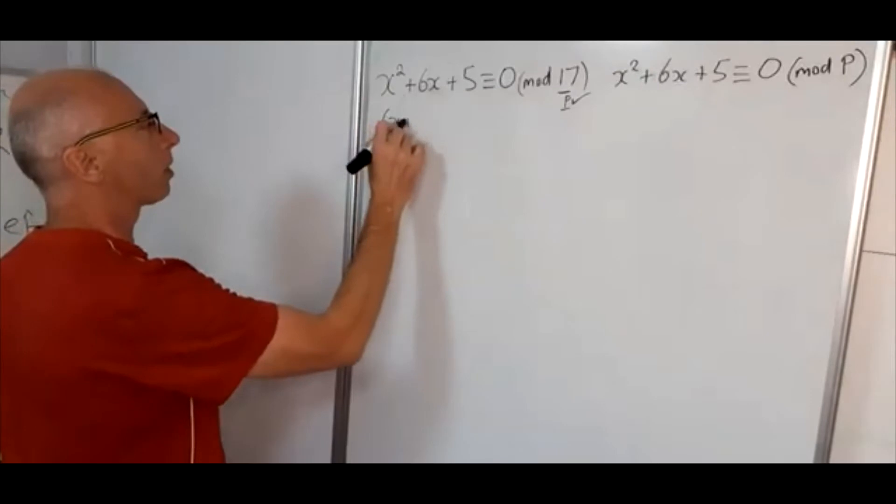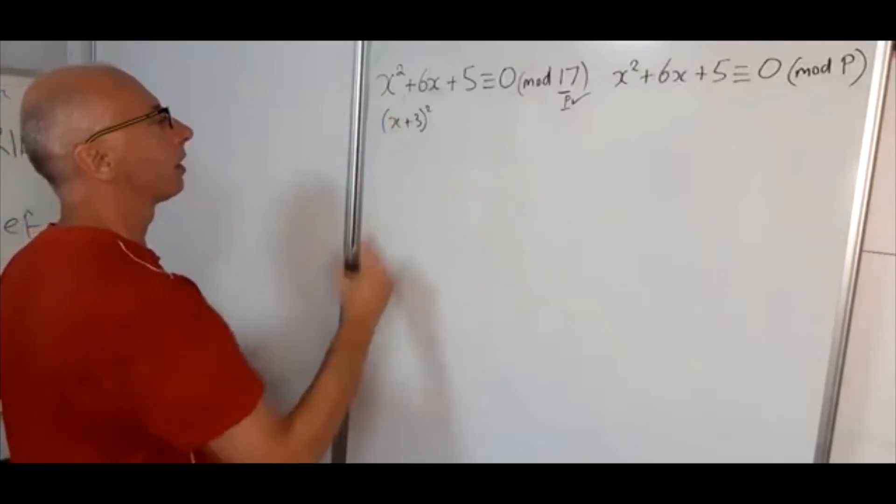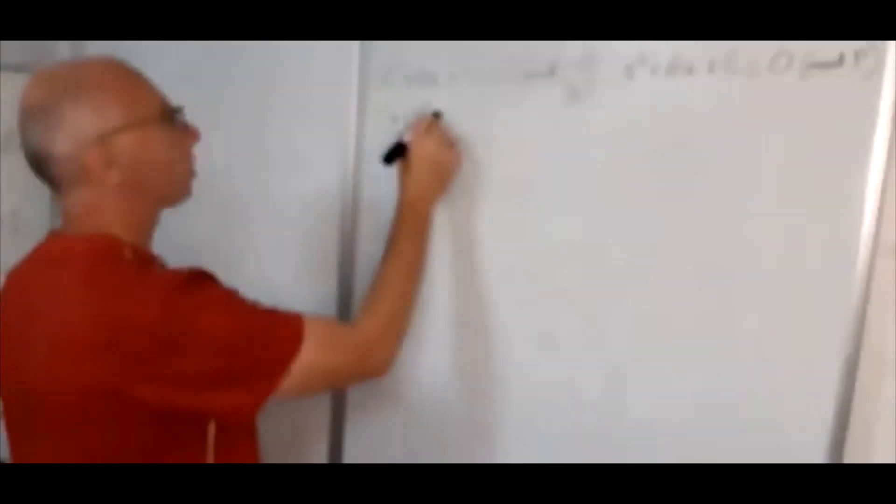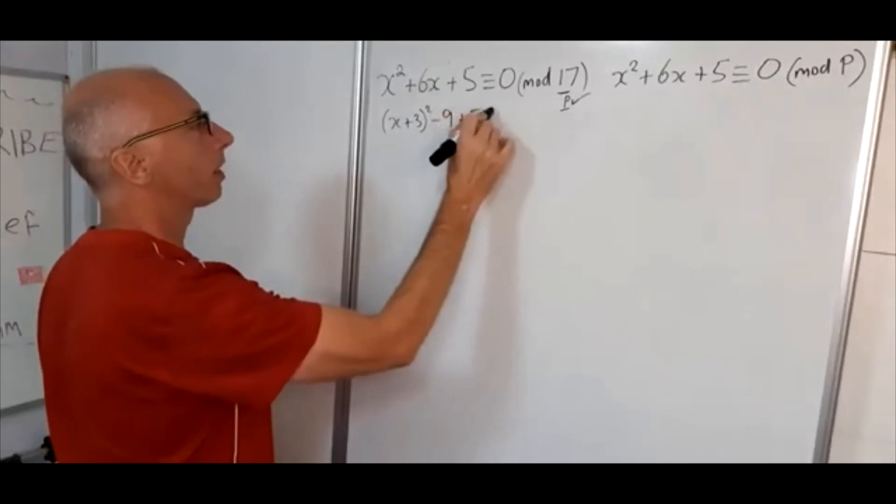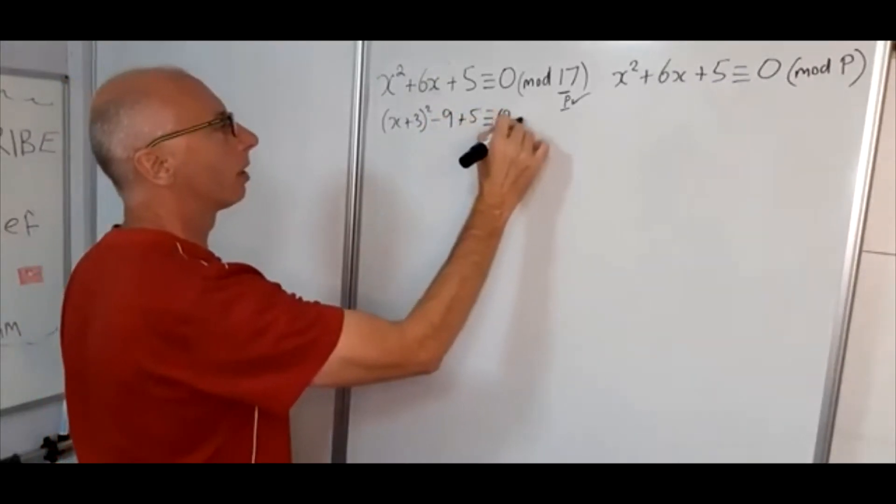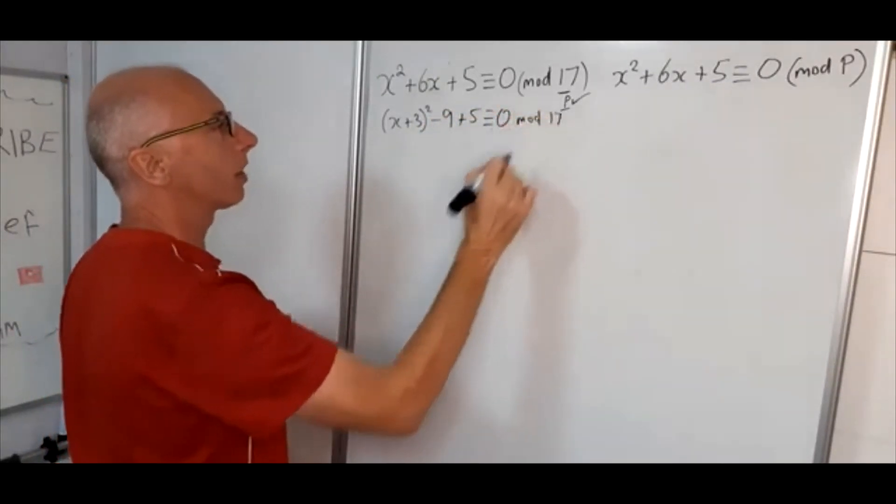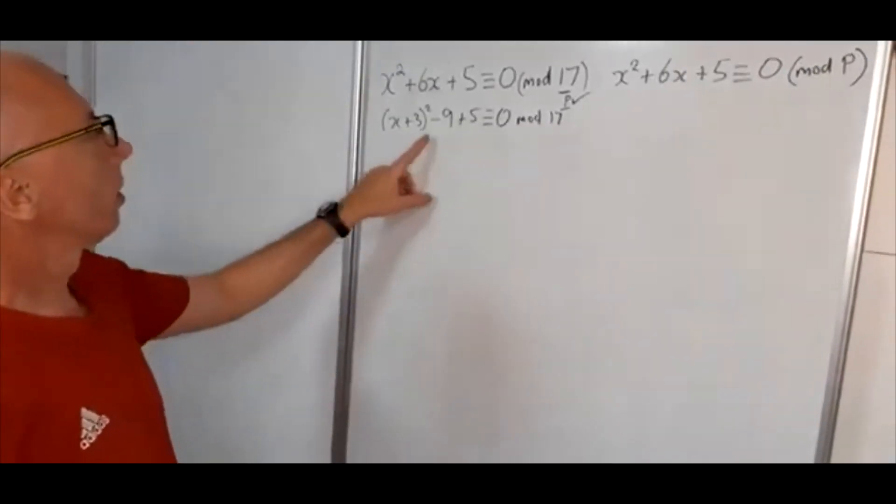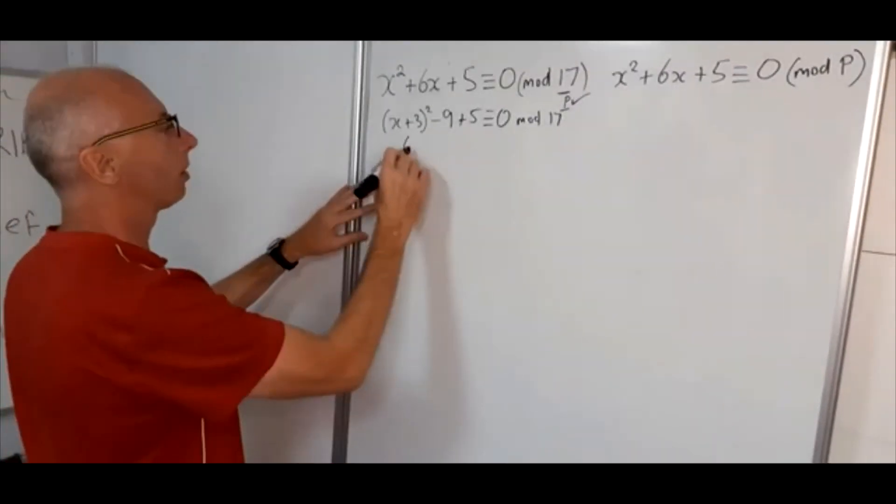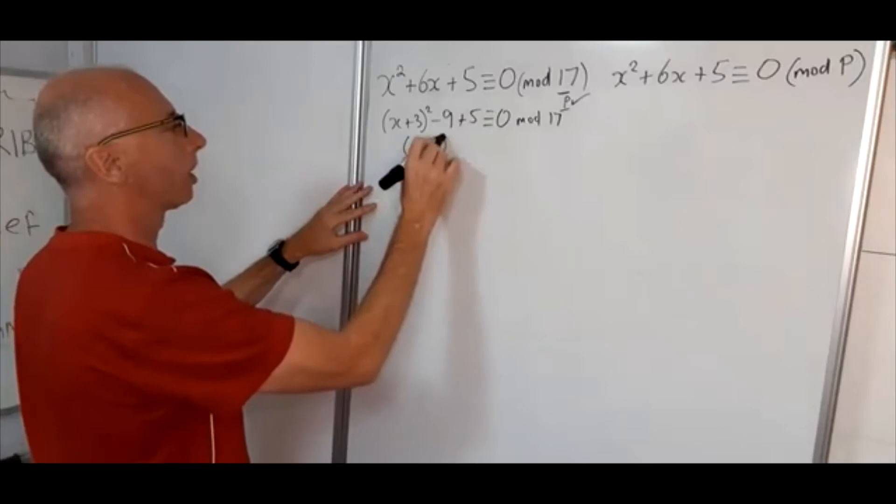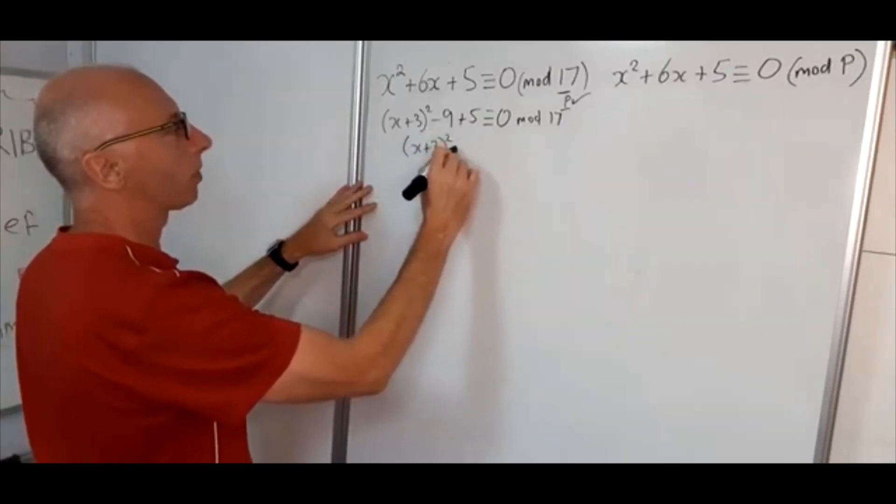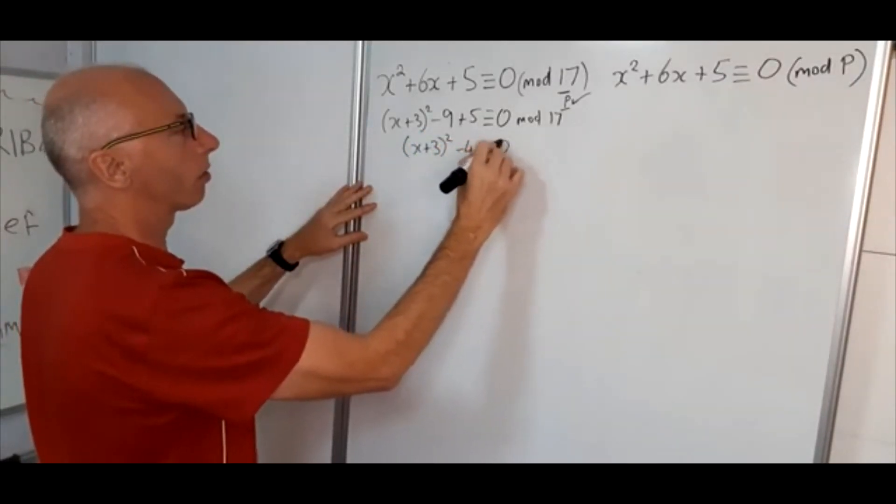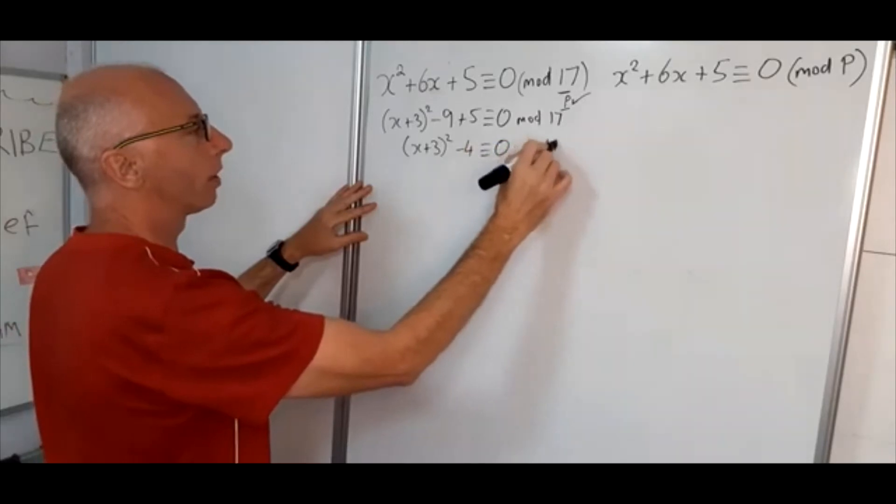So that will give us x plus 3 squared. Now obviously with the plus 3 we subtract 9, add 5 is congruent with 0 mod 17. Just simplify this up a little bit. We've got x plus 3 squared plus 9 minus 5, minus 4, is congruent with 0 mod 17.